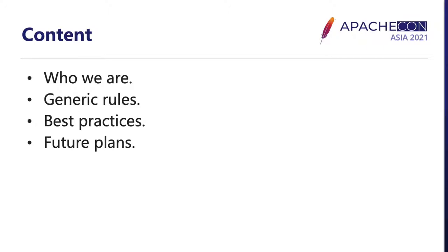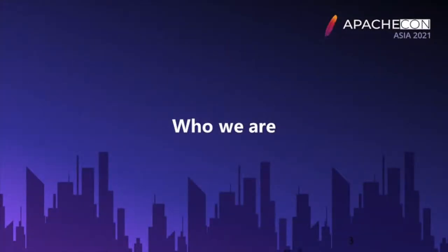This topic consists of four major parts. First, we will give you a brief introduction on who we are and the landscape of the services we built for these communities. In the next two parts, we will walk you through the generic rules and the best practices we achieved. And for the last one, we will talk about our future plans. Let me introduce you to our team and the service landscape.